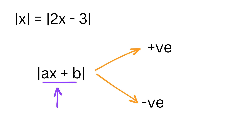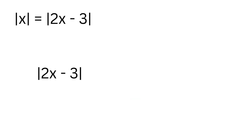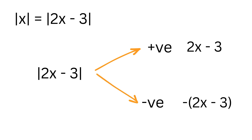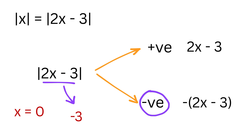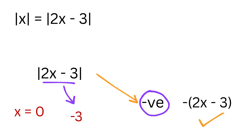If the inside is already positive, then the absolute value does nothing and we simply keep it as a times x plus b. But if the inside is negative, then the absolute value flips the sign by putting a minus in front of the whole expression. For example, the absolute value of two times x minus three will either stay as two times x minus three when that inside is zero or positive, or it will become minus of two times x minus three when that inside is negative. To make this more concrete, suppose x equals zero — then 2x minus 3 equals minus 3, which is negative, so the absolute value of 2x minus 3 will equal minus 2x minus 3.